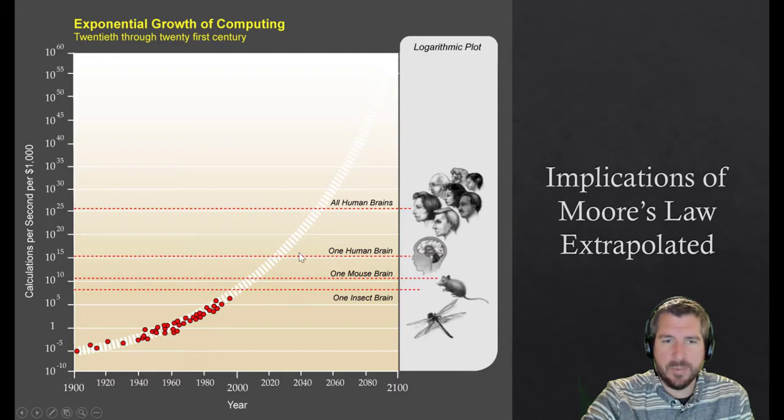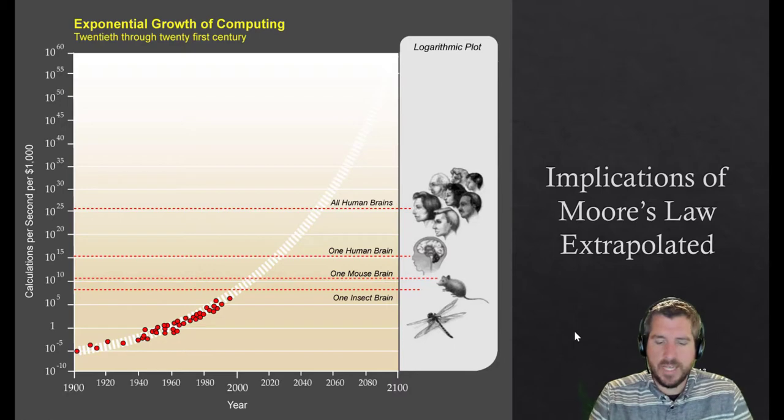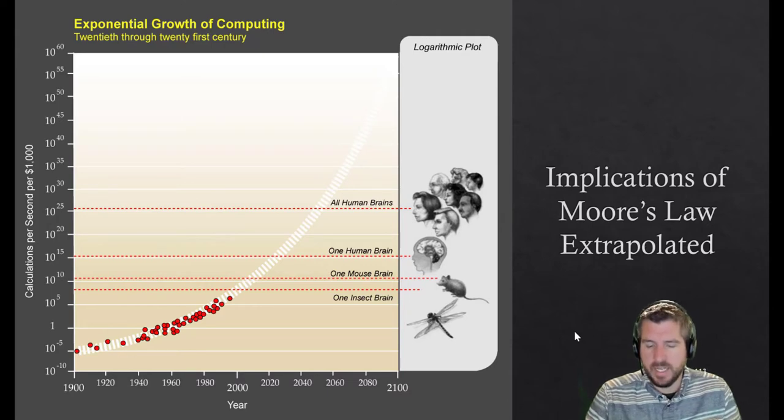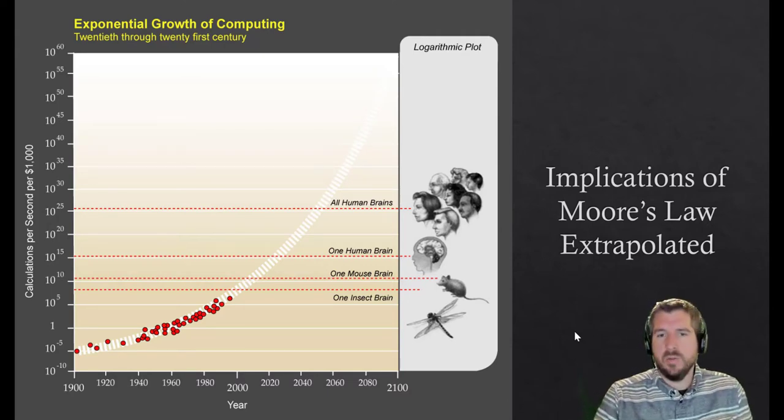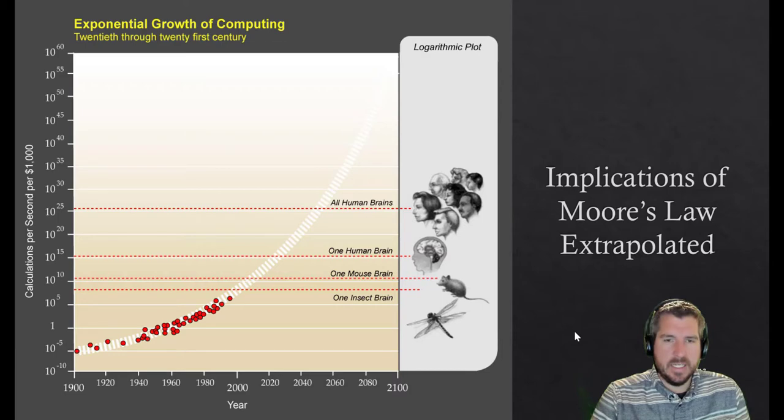The arguments against are that we're making these computer chips with silicon right now, and there's limitations we're running up against with silicon, and we might not ever get there. But it's a sort of crazy thought that a lot of people do think we will get these calculations. Other people say that you can't compare just raw calculations to a human brain. There's more to it than that. It's just an interesting thing to think about, about the implications of this.